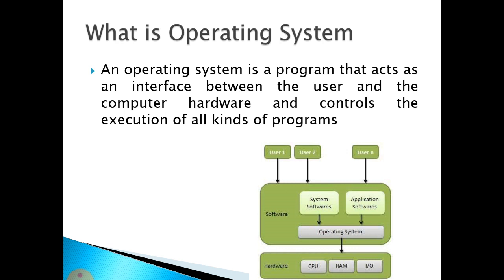All these things are managed by the operating system. If we focus on the layer architecture, the core layer is the hardware layer, which consists of the CPU, RAM, and some I/O devices. Above that is the operating system layer, which consists of different types of software — system software and application software.